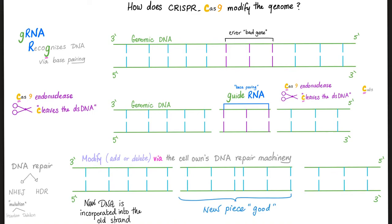And this is called modification. The modification could be adding or deleting. How? Using the cell's own DNA repair machinery — your cell knows how to repair this area and will bind these sticky ends together. So who recognized the bad area? gRNA. Who cut and cleaved this bad area? Cas9 endonuclease.